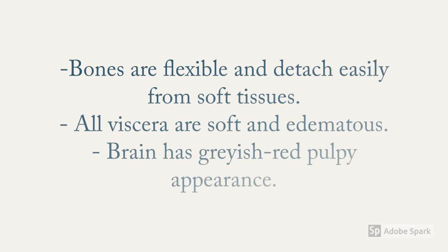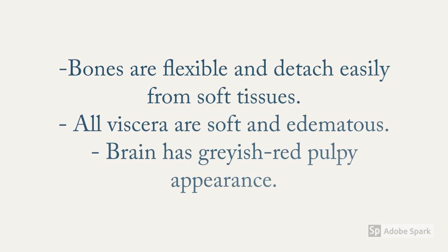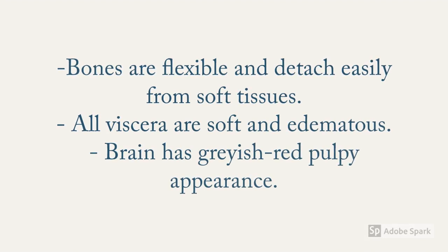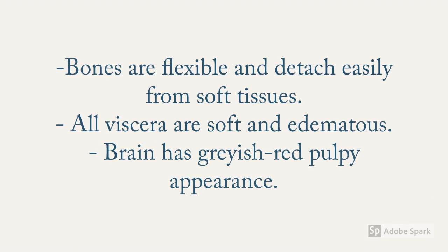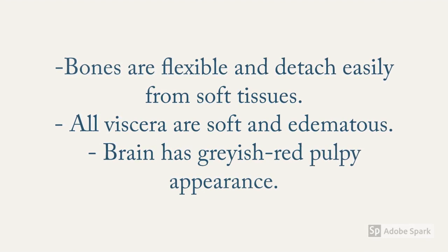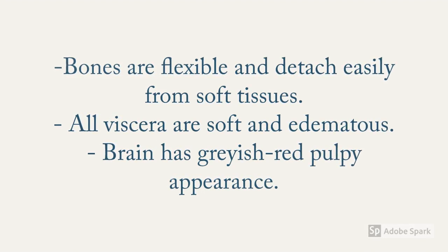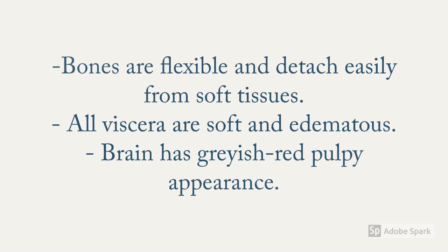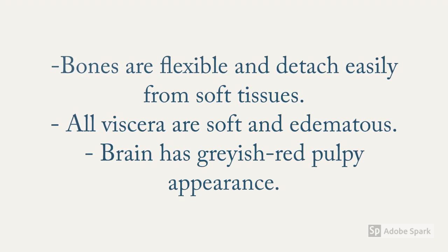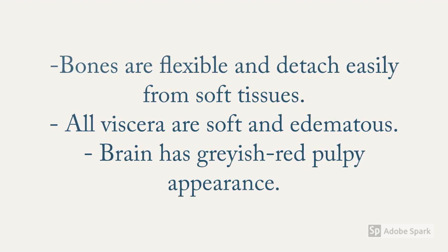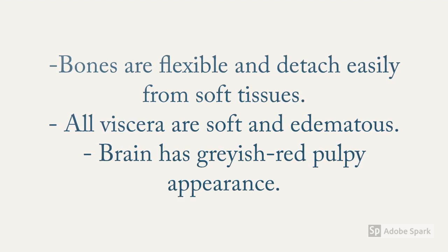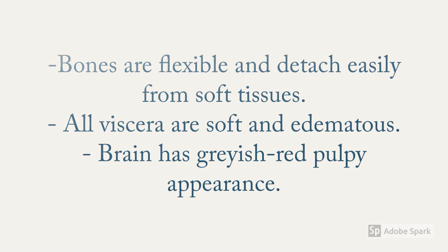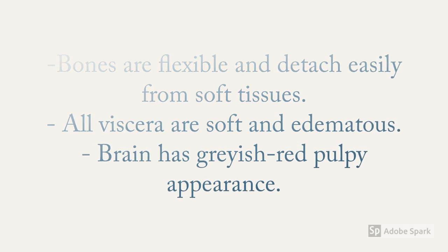Bones are flexible and detach easily from soft tissues. All viscera are soft and edematous, and the brain has a greyish-red pulpy appearance and is one of the tissues to show the earliest autolytic changes.